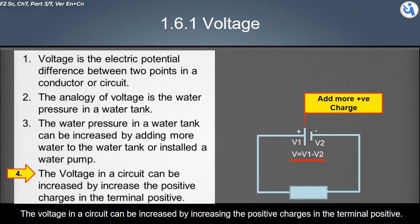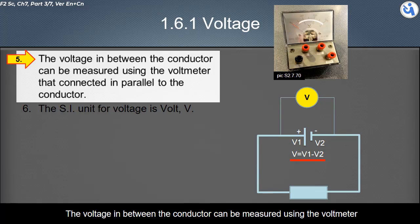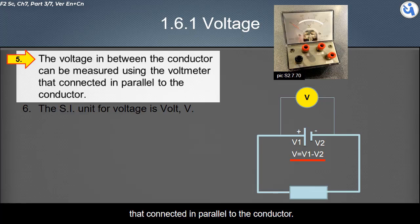The voltage in a circuit can be increased by increasing the positive charges in the terminal positive. The voltage in between the conductor can be measured using the voltmeter that is connected in parallel to the conductor.